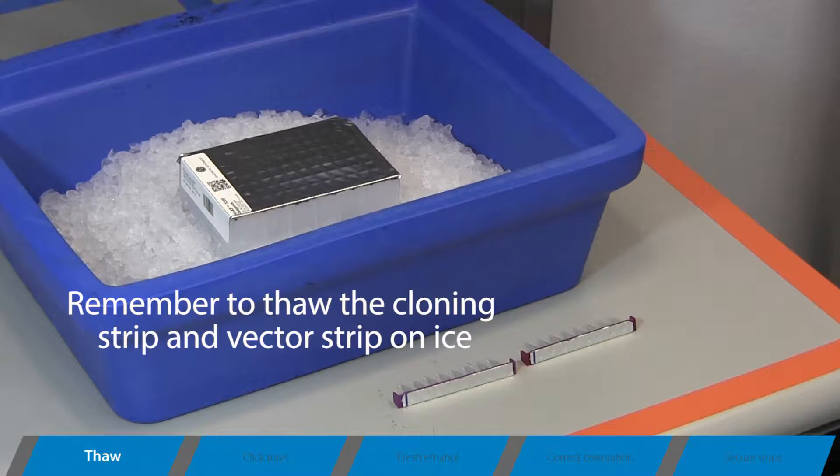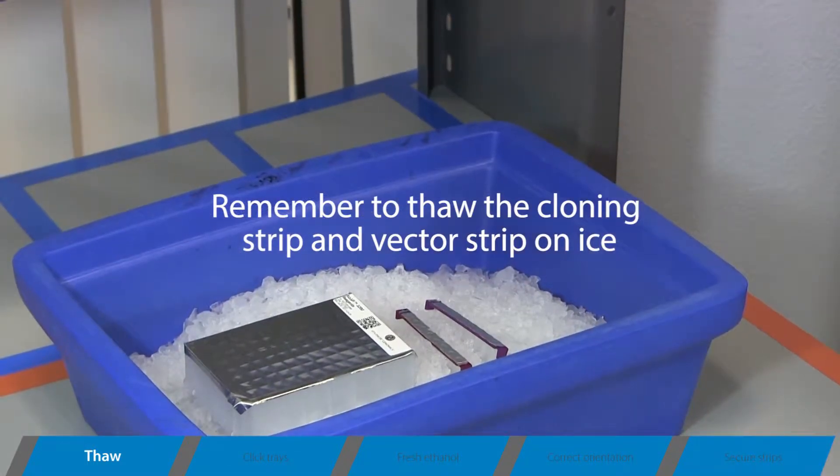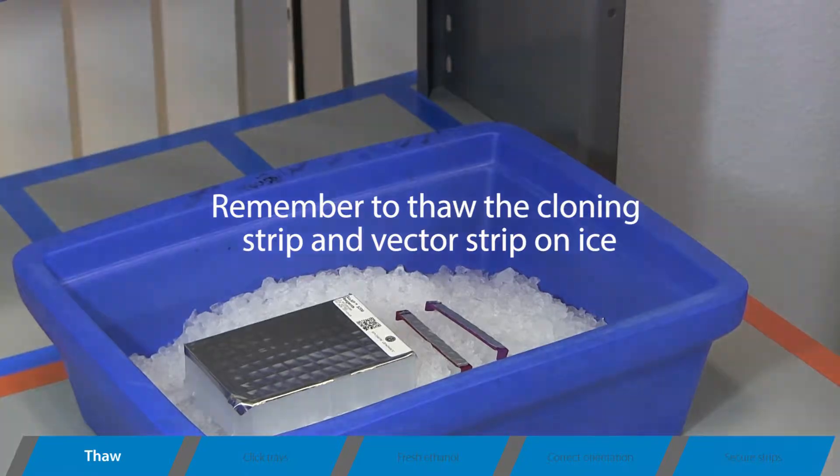Thaw the reagent plate and the cloning and vector strips on ice. Cloning and vector strips thawed at room temperature should not be loaded onto the instrument. Always thaw these items on ice before loading them onto your instrument deck.